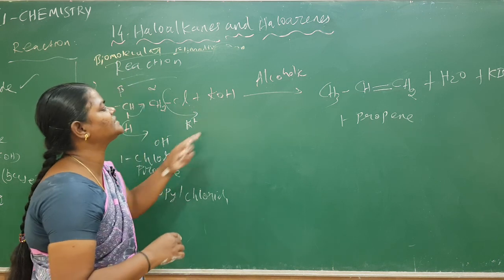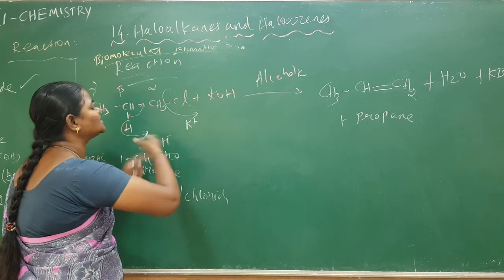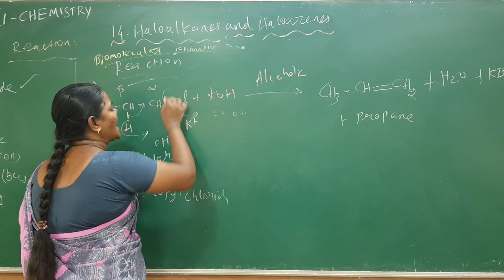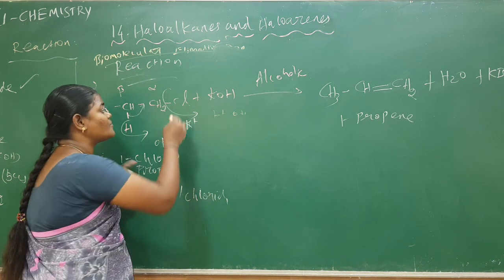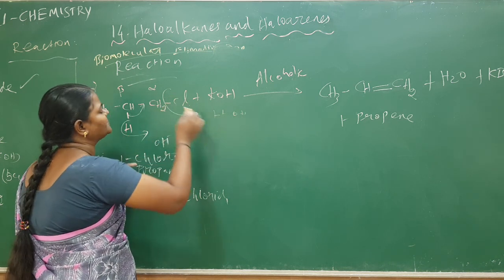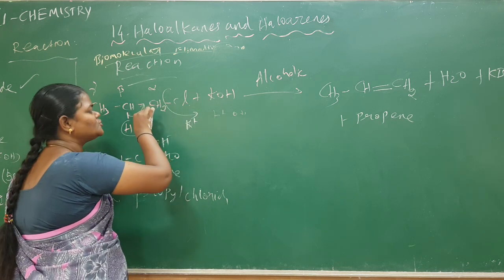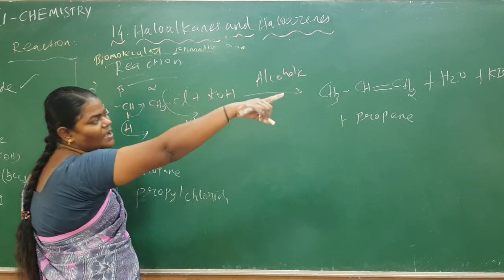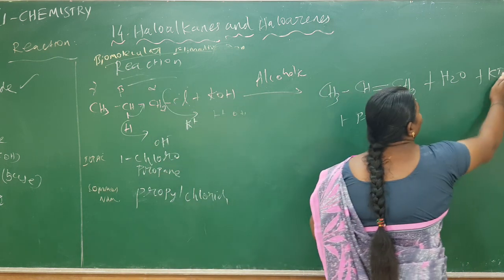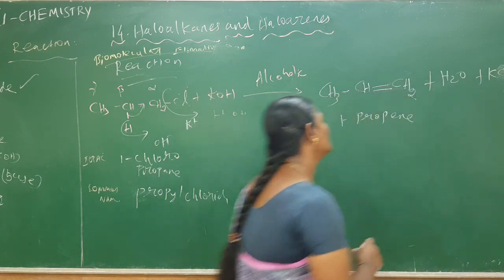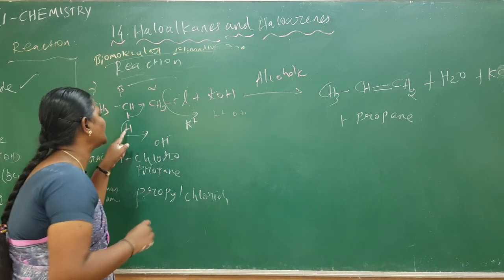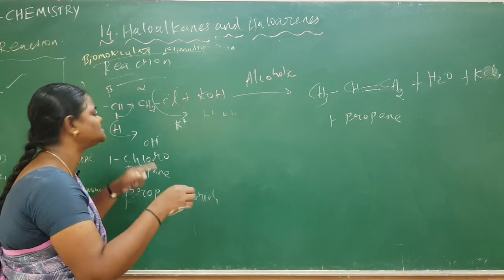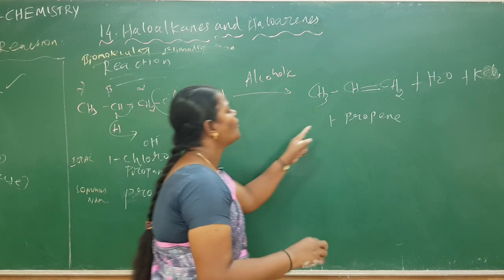This compound reacts with the strong base KOH. KOH dissociates into two forms: K+ and OH−. The K+ attacks the more electronegative chlorine atom, so the chlorine leaves along with its electrons, forming KCl. The remaining hydrogen is unstable — it is lost, this bond shifts here, and it forms 1-propene as the product.